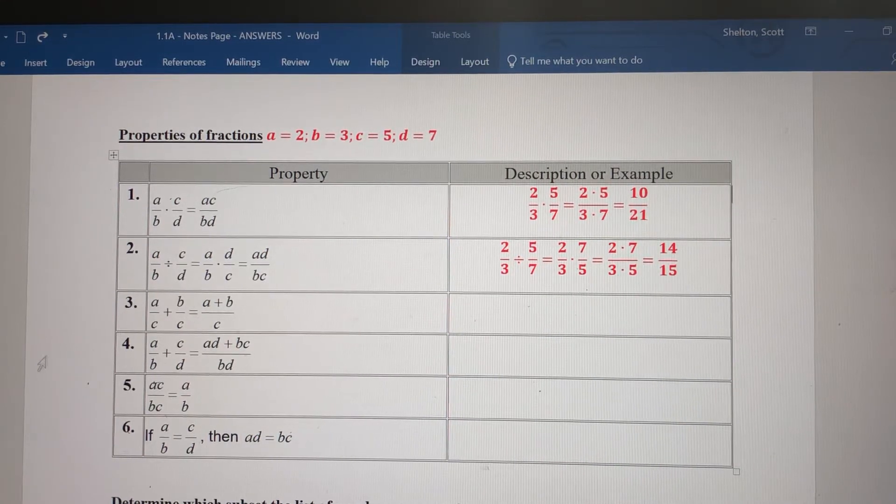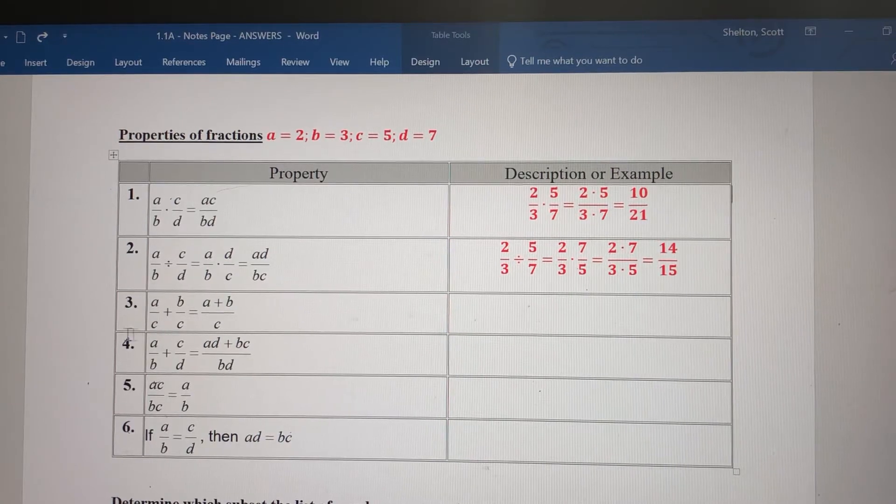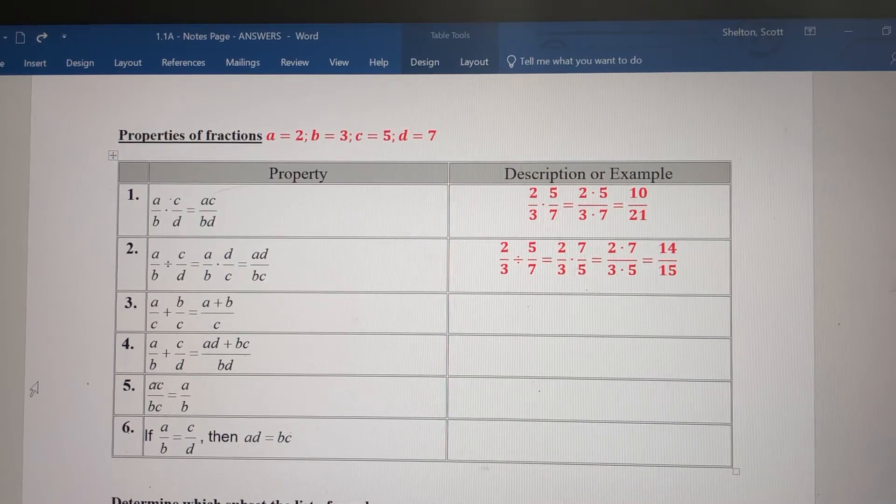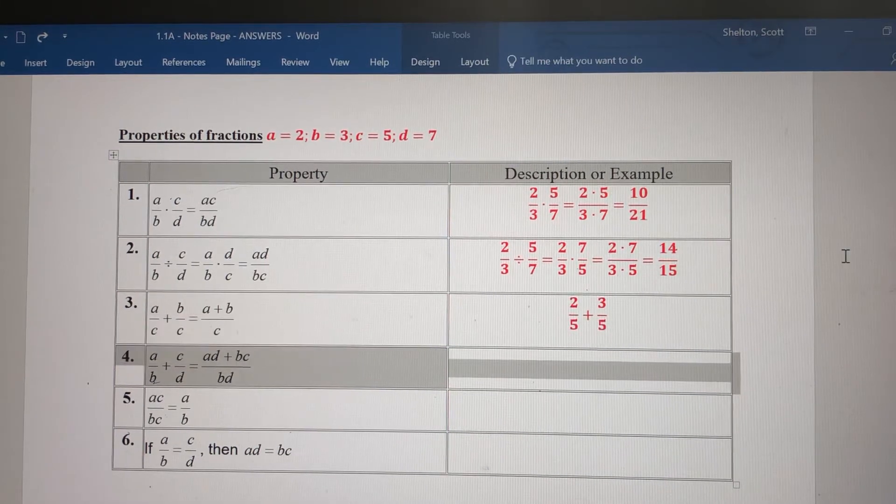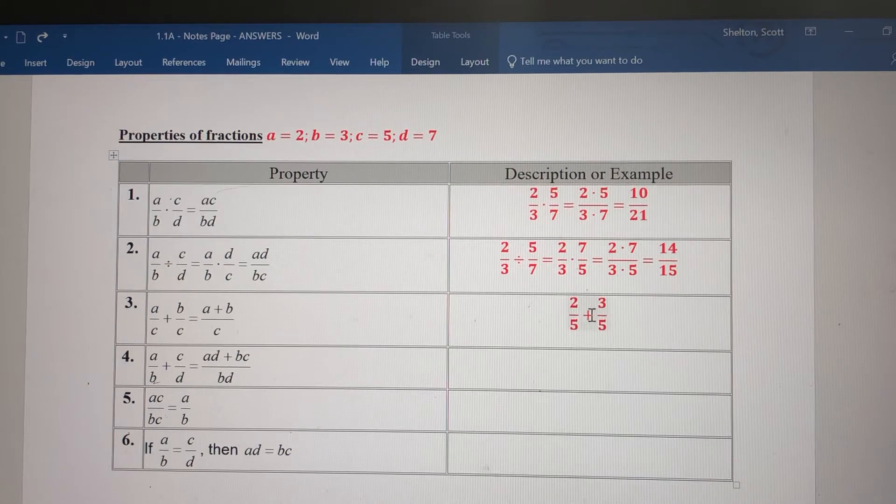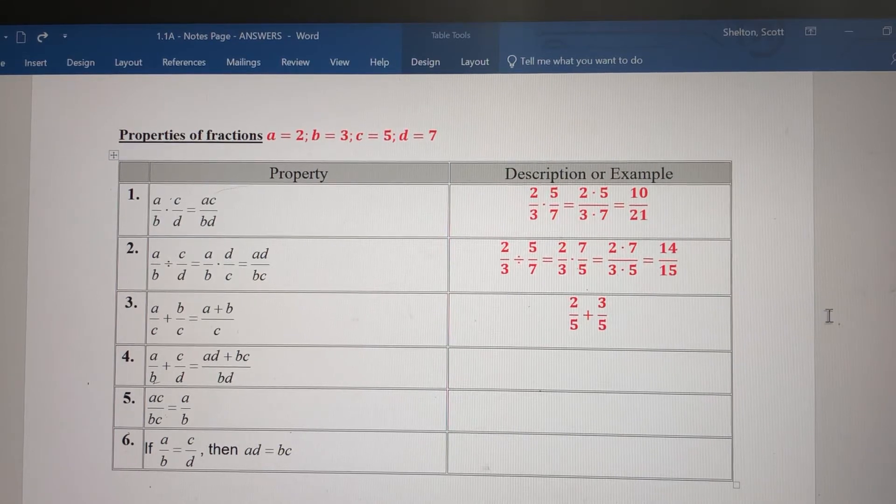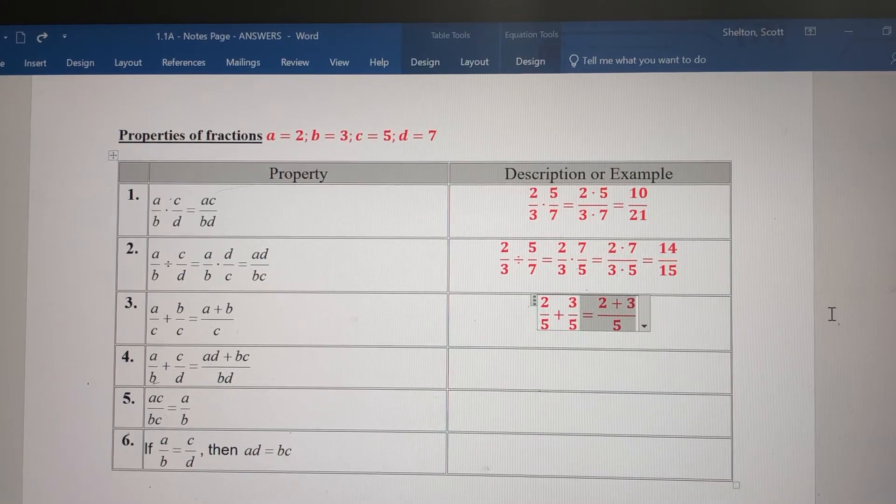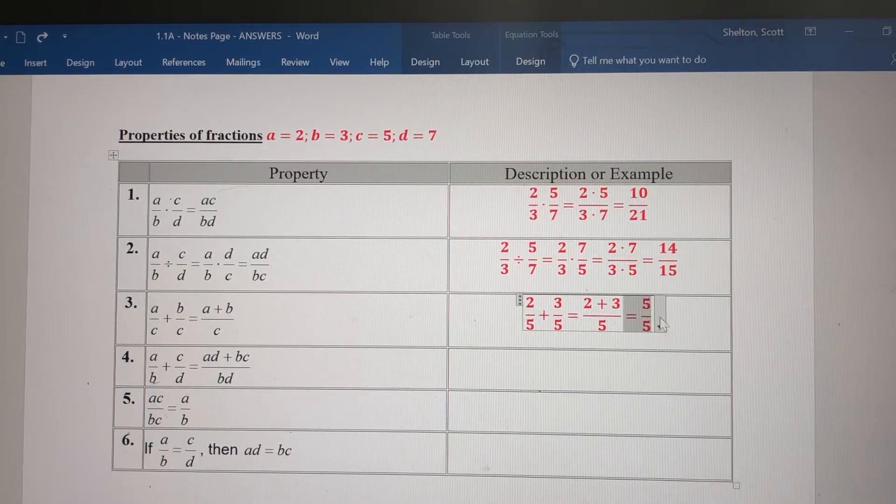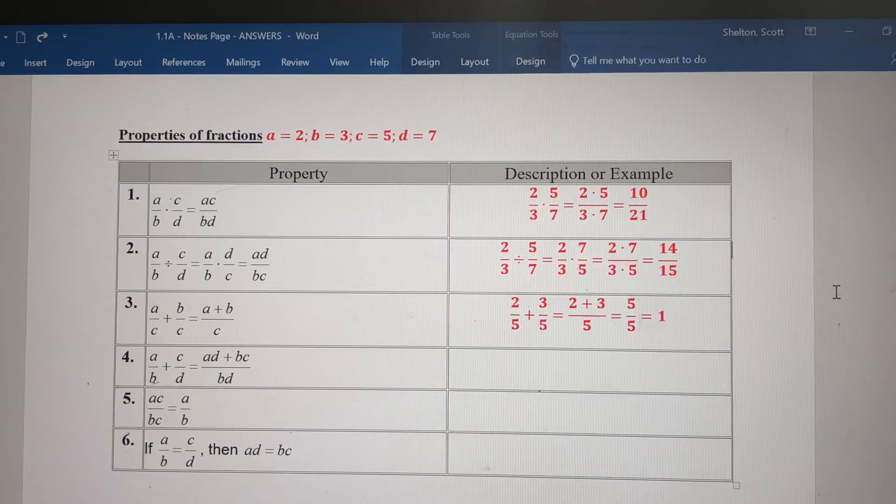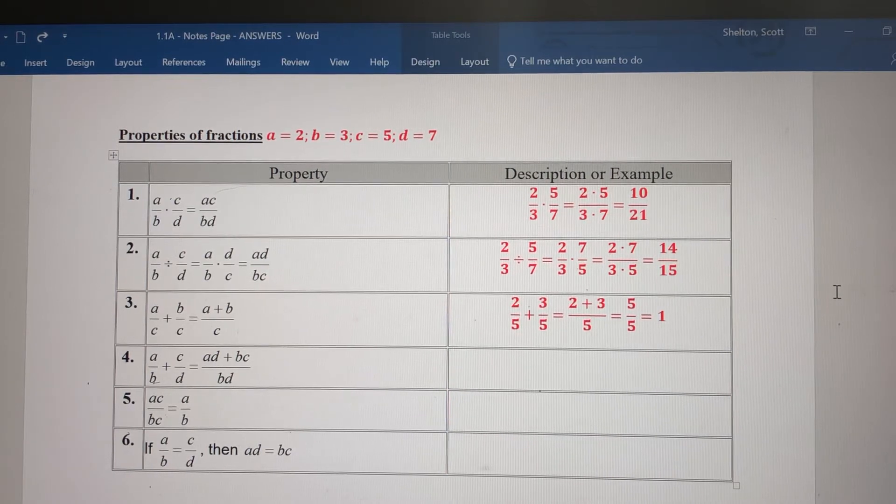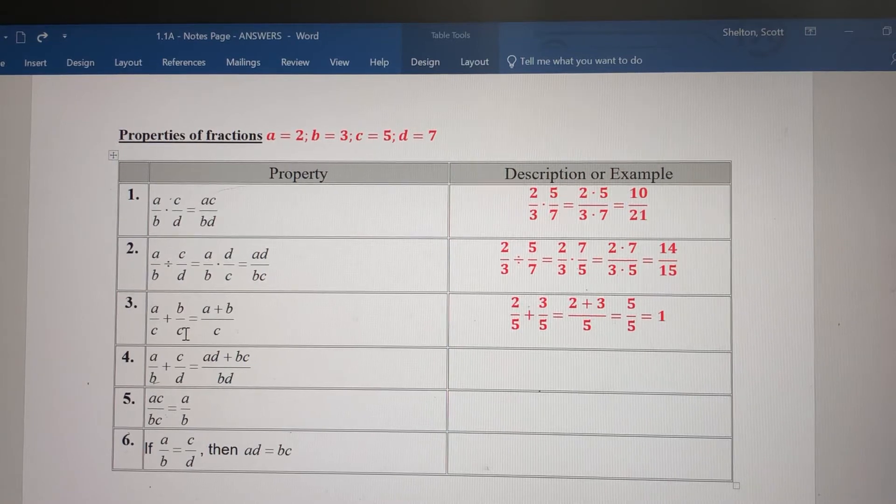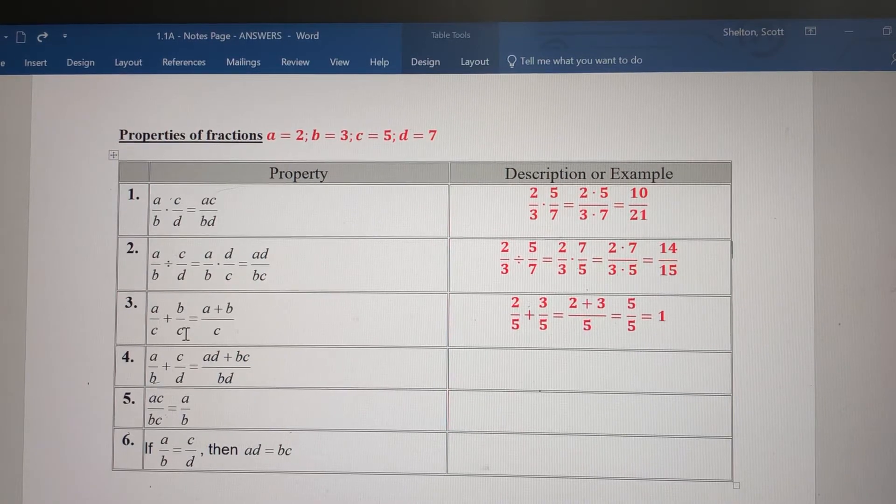Number 3: adding fractions with the same denominator. If you have a common denominator, you can add those fractions without doing anything extra. Using our values, 2/5 plus 3/5 - I have a common denominator, so add the numerators: 2 and 3 gives 5. Simplify: 5/5 is 1. Adding fractions with a common denominator is easy - add the numerators, simplify if needed, and you're finished.